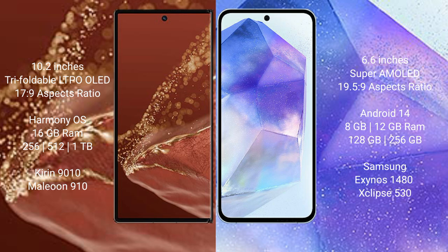The Wahabamate XT Ultimate runs on the HarmonyOS operating system. The Samsung Galaxy A55 runs on Android 14. The Wahabamate XT Ultimate comes with 16GB RAM and 256GB to 1TB internal storage, powered by the Kirin 9010 processor with GPU 910.